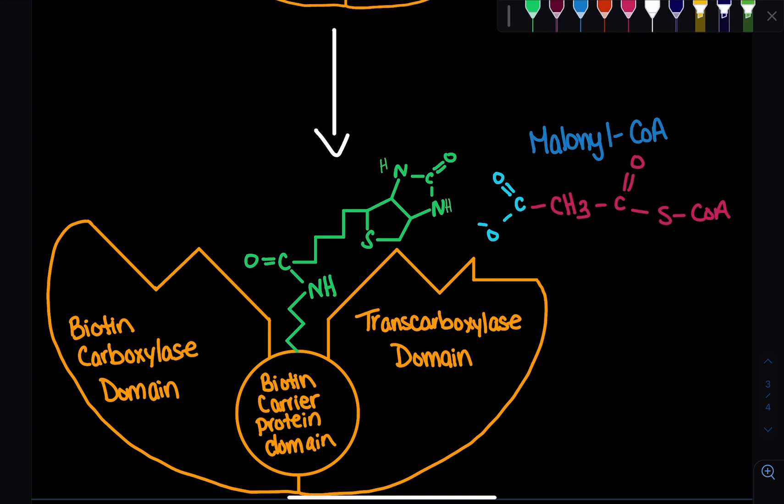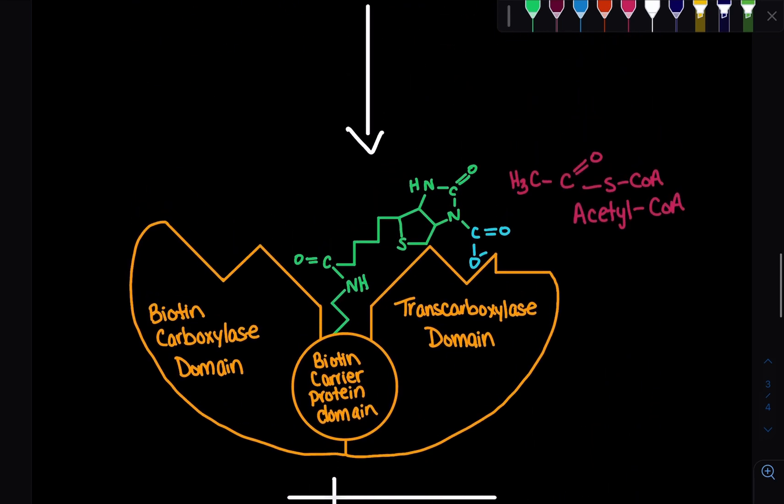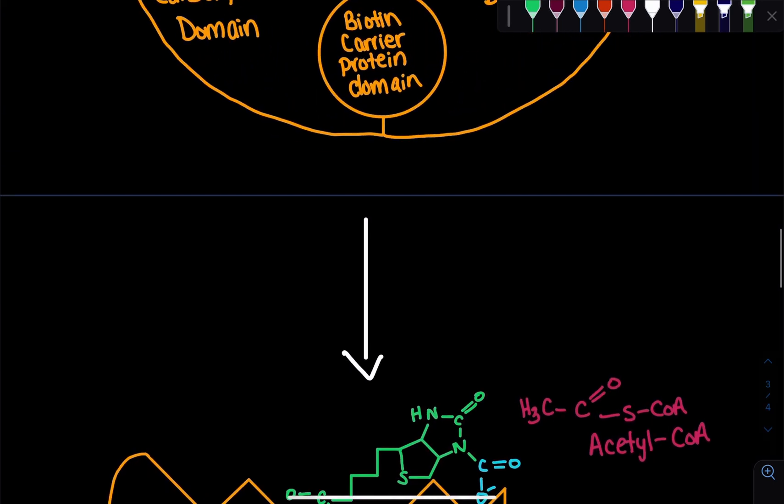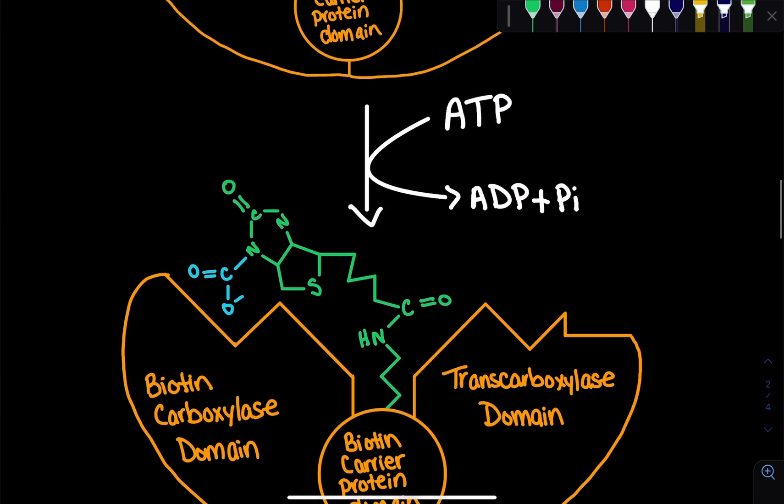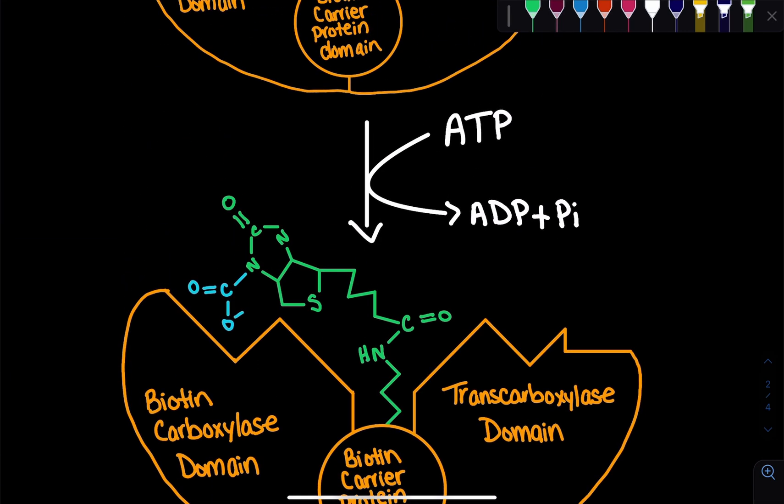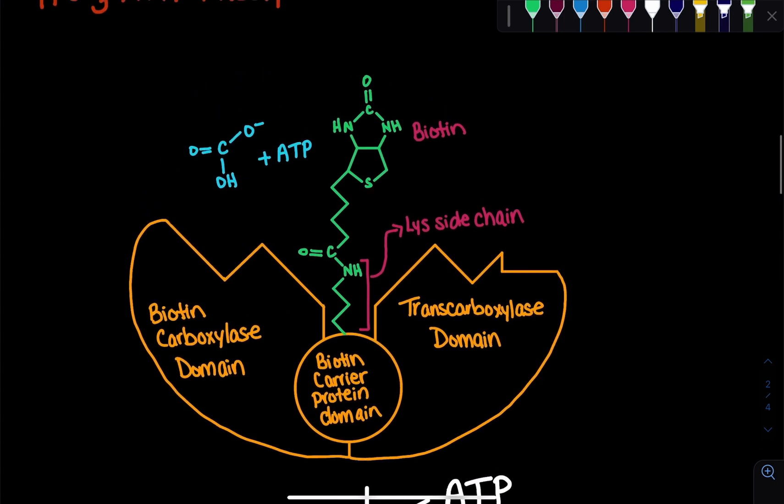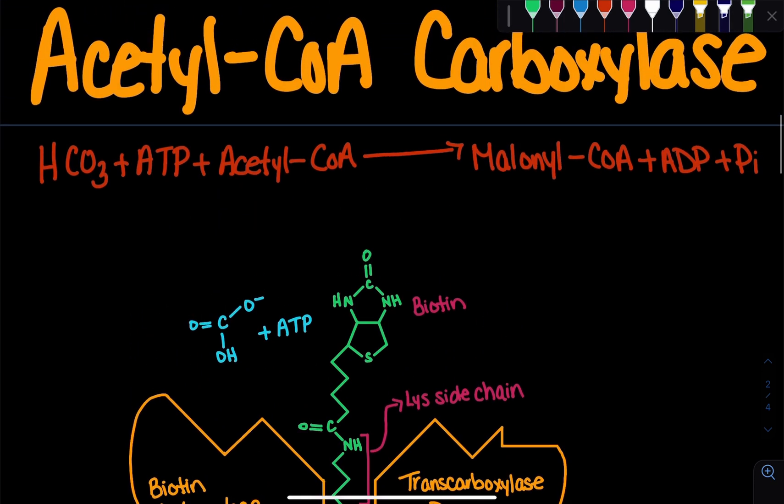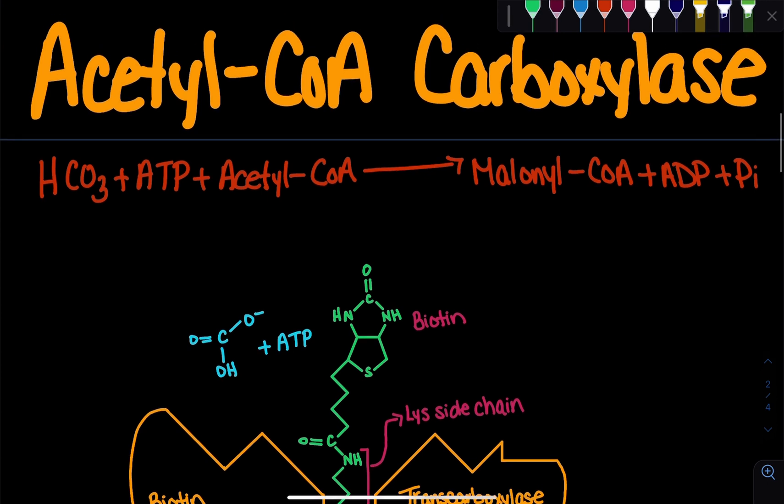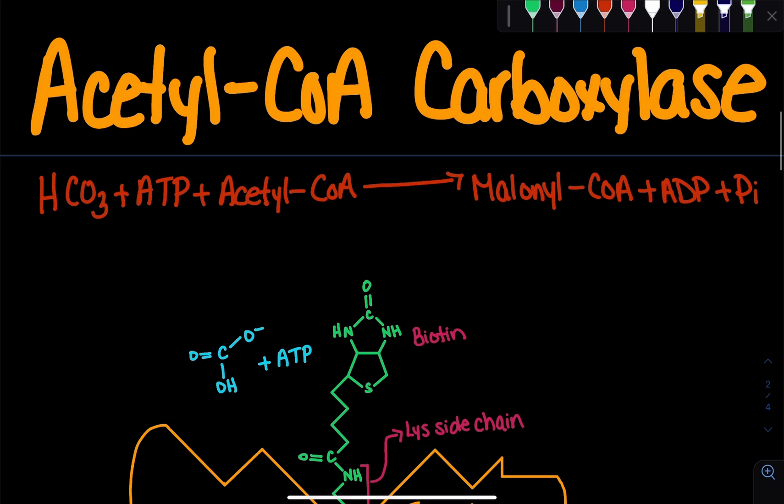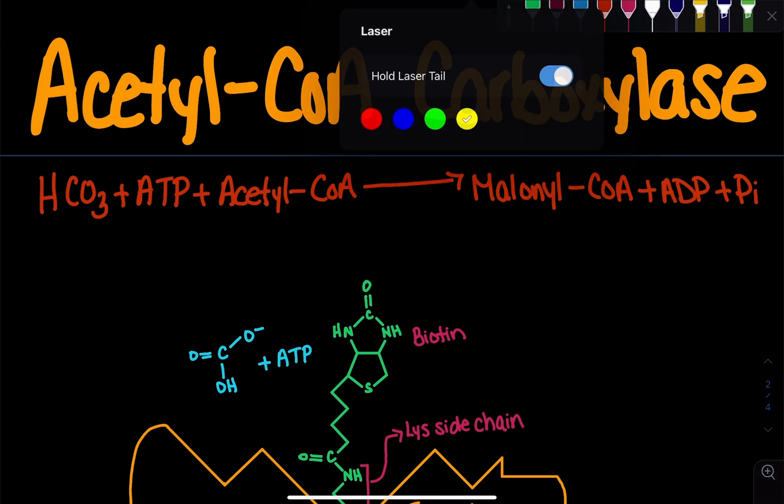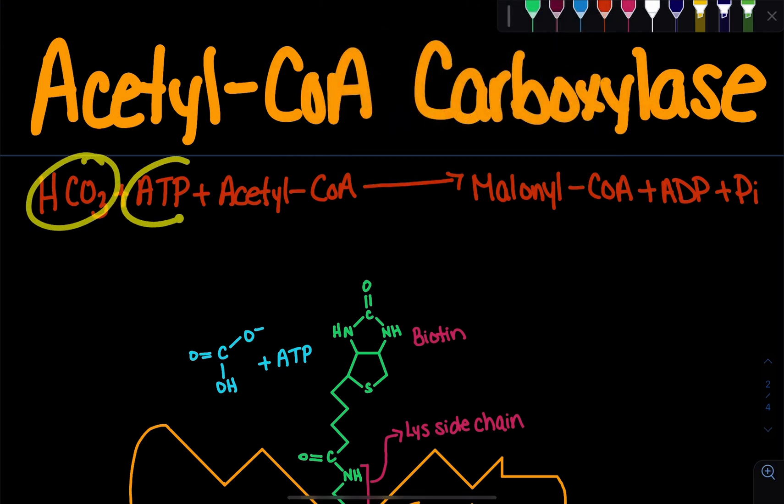We need to form this malonyl-CoA because malonyl-CoA acts as the two-carbon donor in fatty acid synthesis. It's important to note that this process of fatty acid synthesis is occurring in the cytoplasm, whereas the reverse, fatty acid breakdown, will be occurring in the mitochondria, in the matrix of the mitochondria. Overall, we can see that we went from bicarbonate plus ATP plus acetyl-CoA, and we formed malonyl-CoA. This malonyl-CoA is going to be the building block of fatty acids.